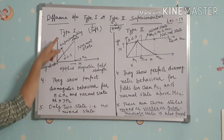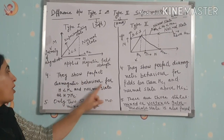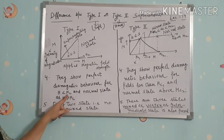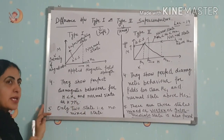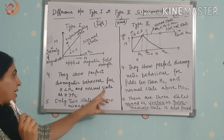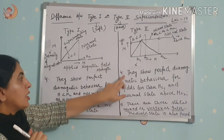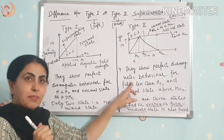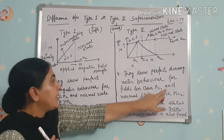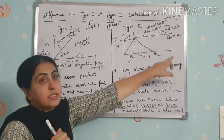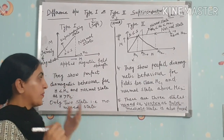Fourth difference: Type 1 superconductors show perfect diamagnetic behavior for H less than Hc, with susceptibility equal to −1, and enter the normal state for H greater than Hc. Type 2 superconductors show perfect diamagnetic behavior for H less than Hc1, and enter the normal state above Hc2, because they have two critical fields Hc1 and Hc2.